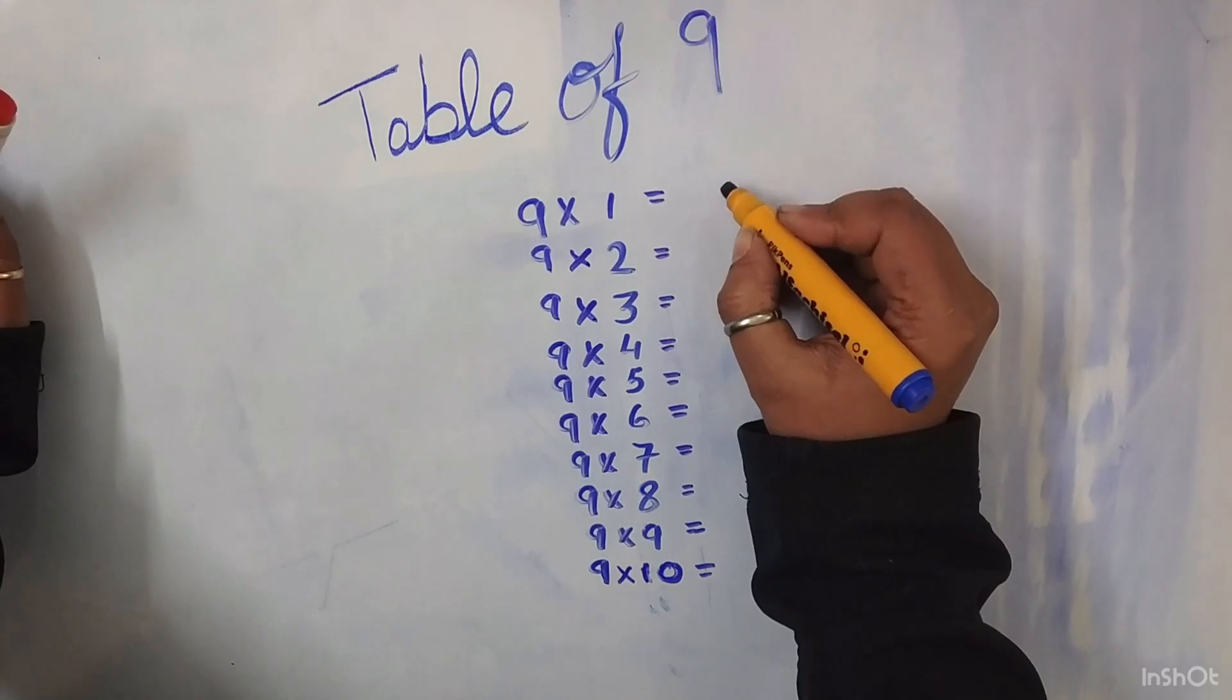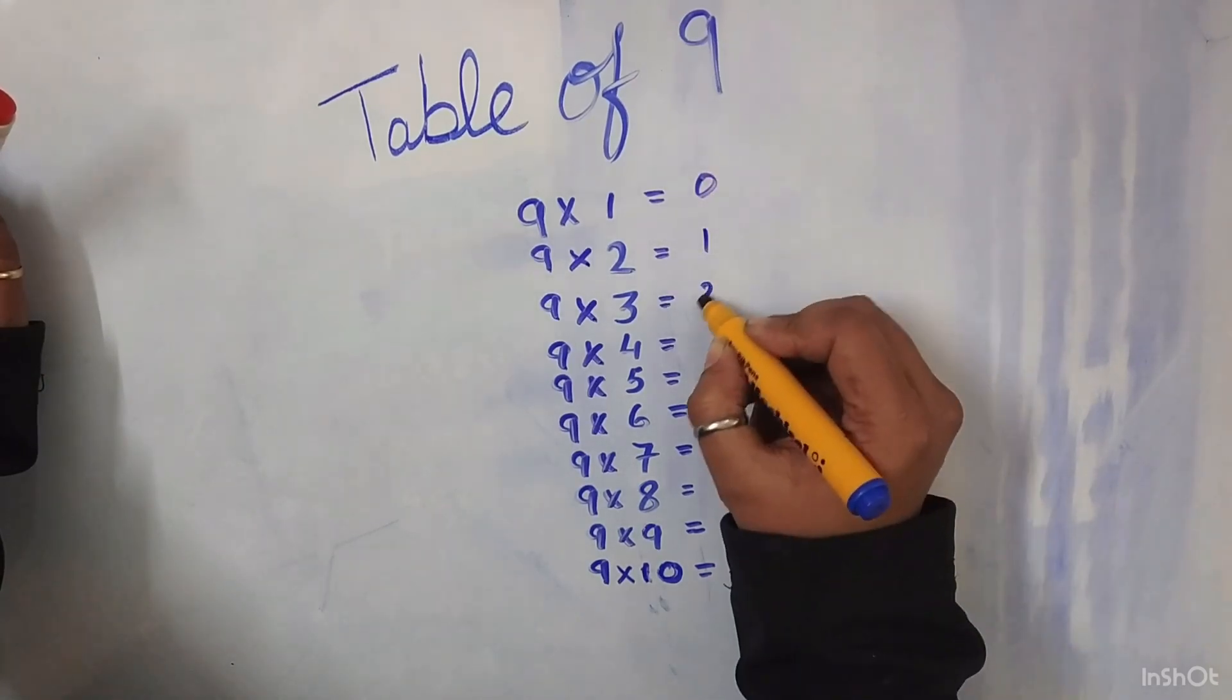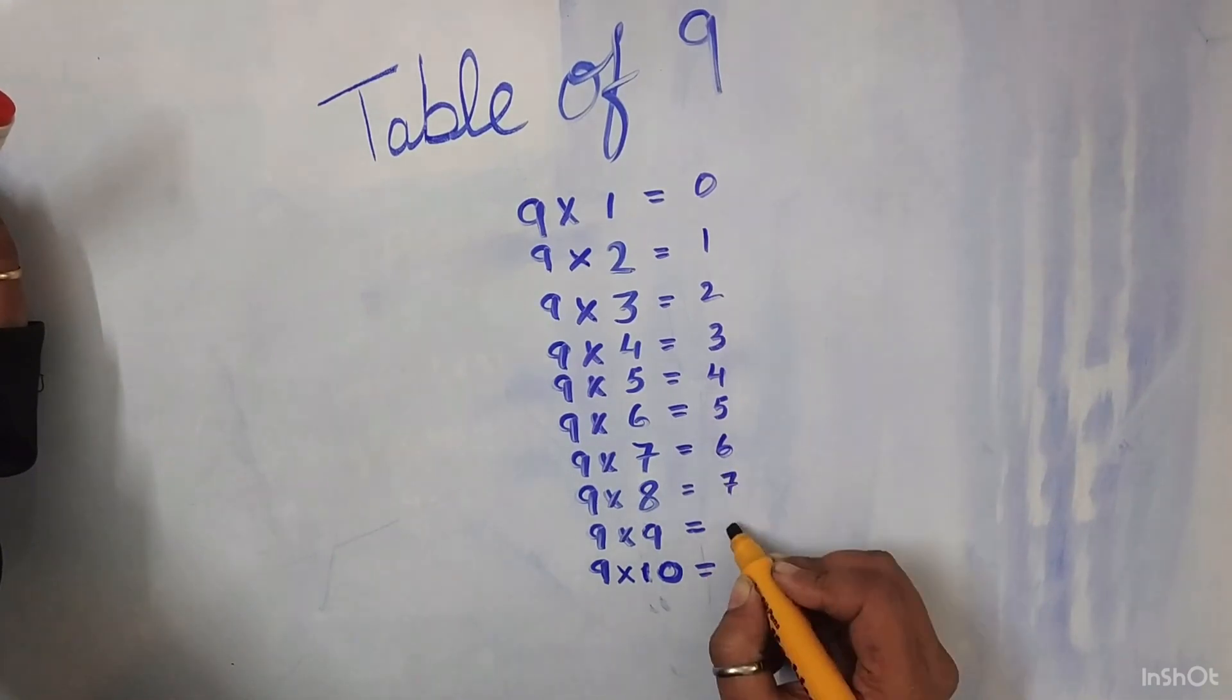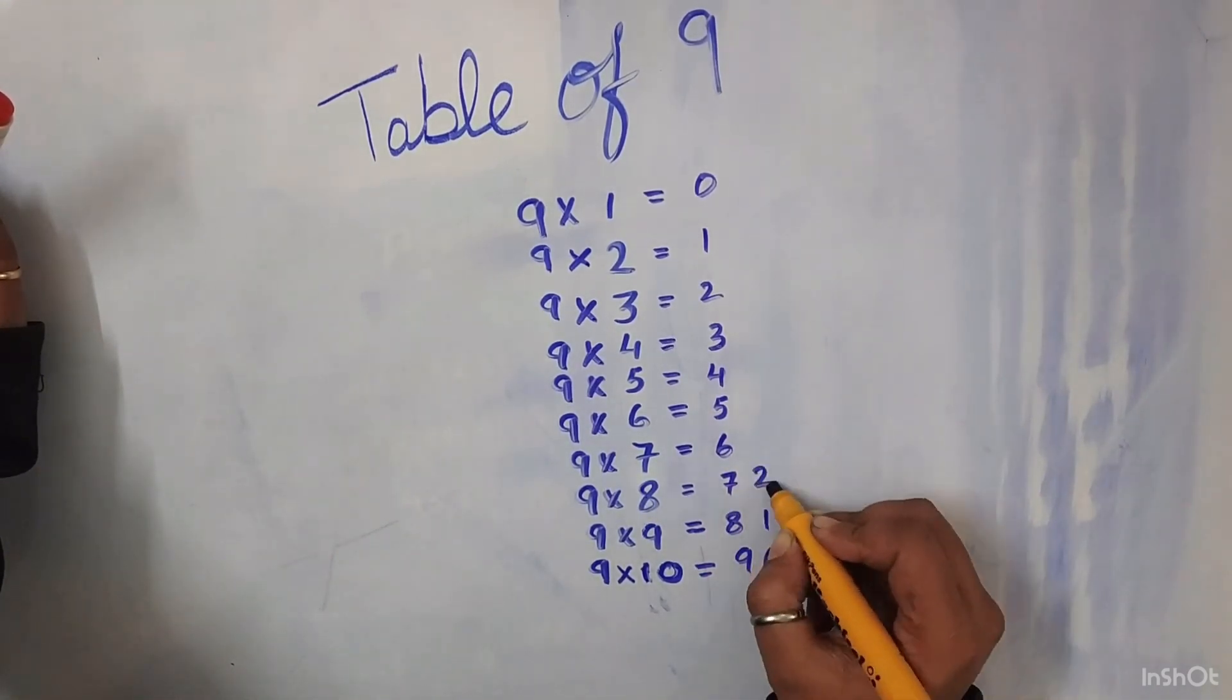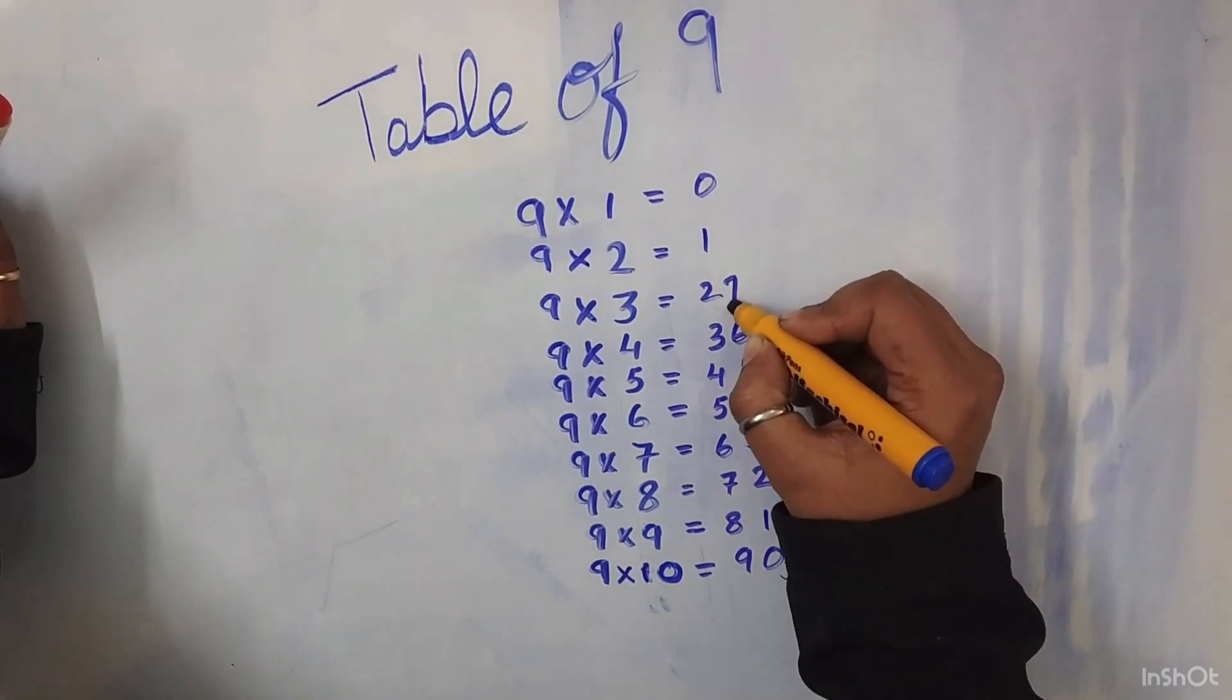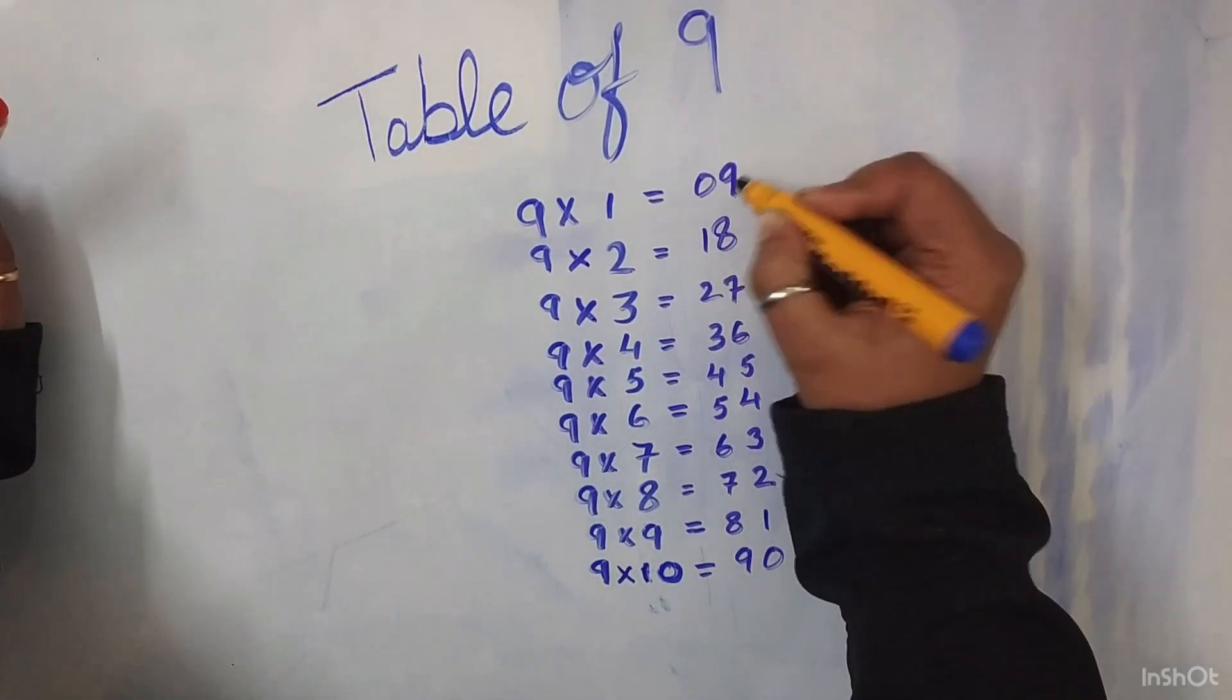For the table of 9, we will start writing 0, 1, 2, 3, 4, 5, 6, 7, 8 and 9. Now again 0, 1, 2, 3, 4, 5, 6, 7, 8 and 9.